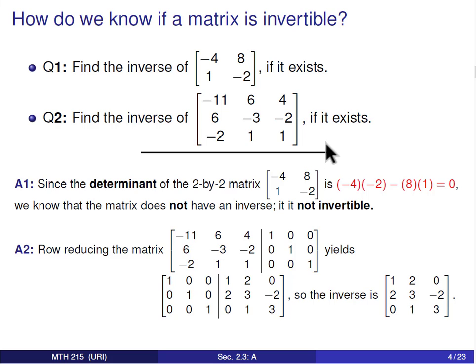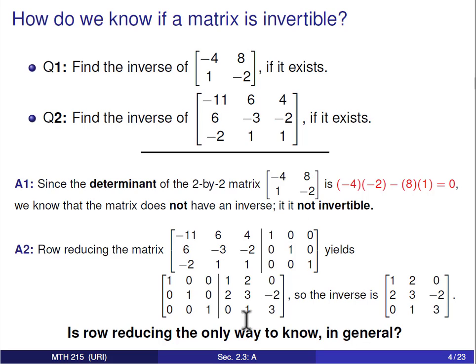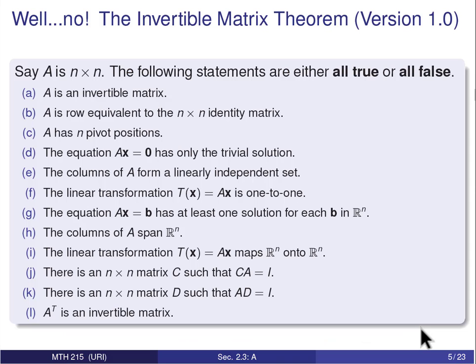Now the question you might run into is: is row reducing the only way to get the inverse, or to know if there is an inverse in general? While we won't say it's the only way to produce an inverse, row reducing is not the only way to tell whether a matrix has an inverse. There are several different characteristics that invertible matrices all share.